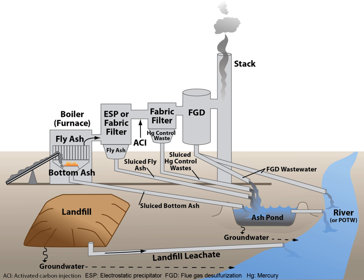Activated sludge process: Activated sludge is a biochemical process for treating sewage and industrial wastewater that uses air and microorganisms to biologically oxidize organic pollutants, producing a waste sludge containing the oxidized material. In general, an activated sludge process includes an aeration tank where air or oxygen is injected and thoroughly mixed into the wastewater, and a settling tank usually referred to as a clarifier or settler to allow the waste sludge to settle. Part of the waste sludge is recycled to the aeration tank and the remaining waste sludge is removed for further treatment and ultimate disposal.